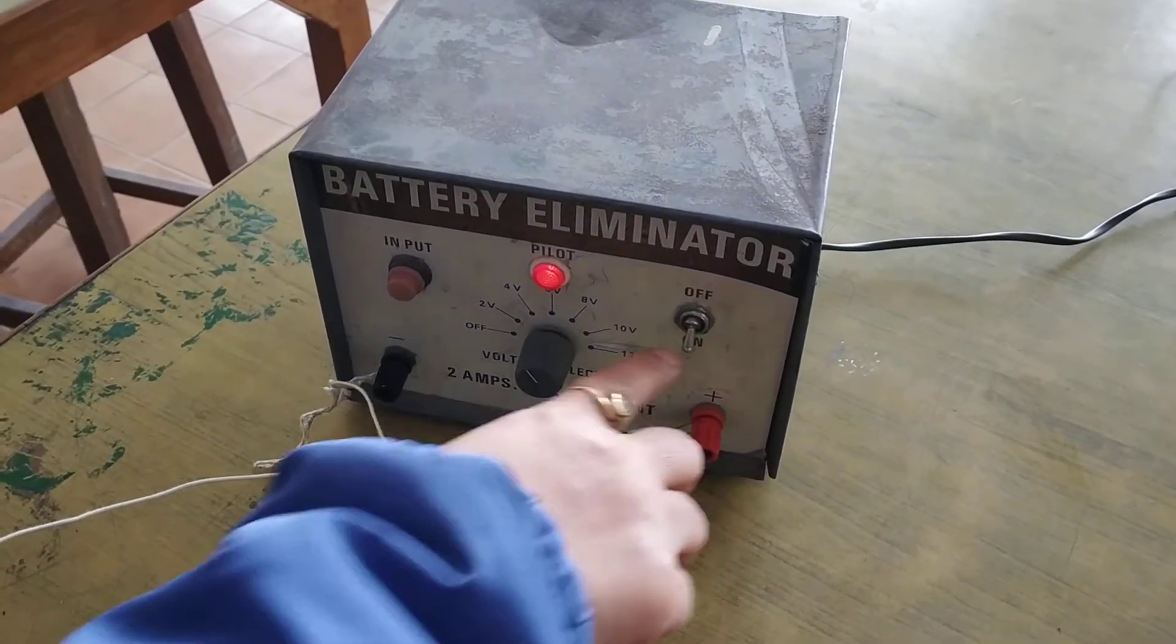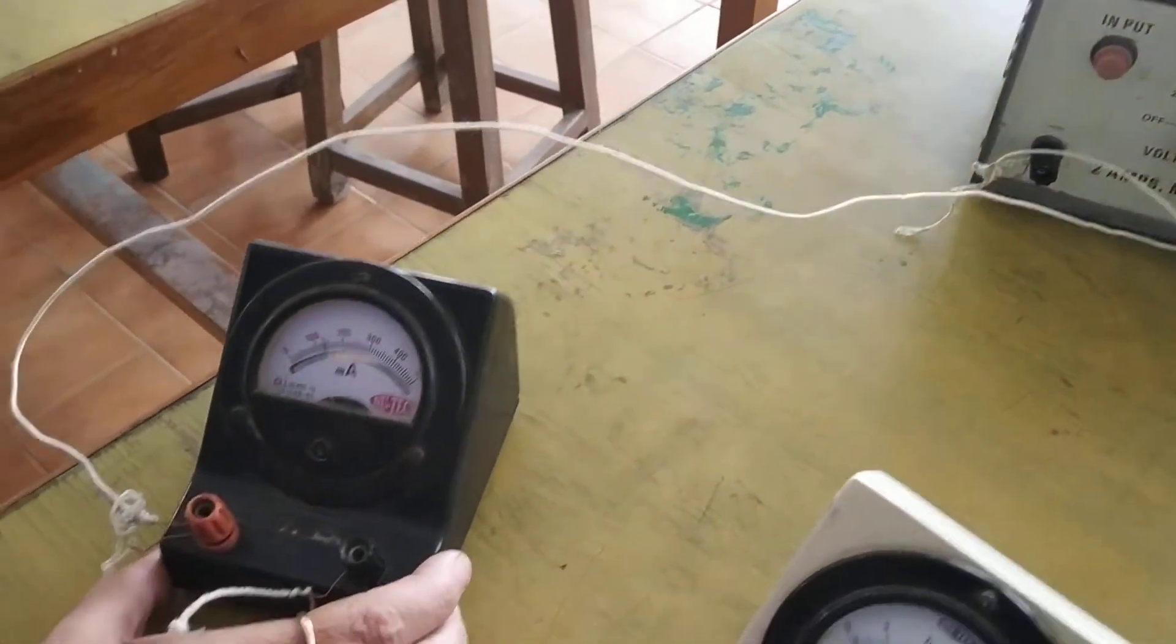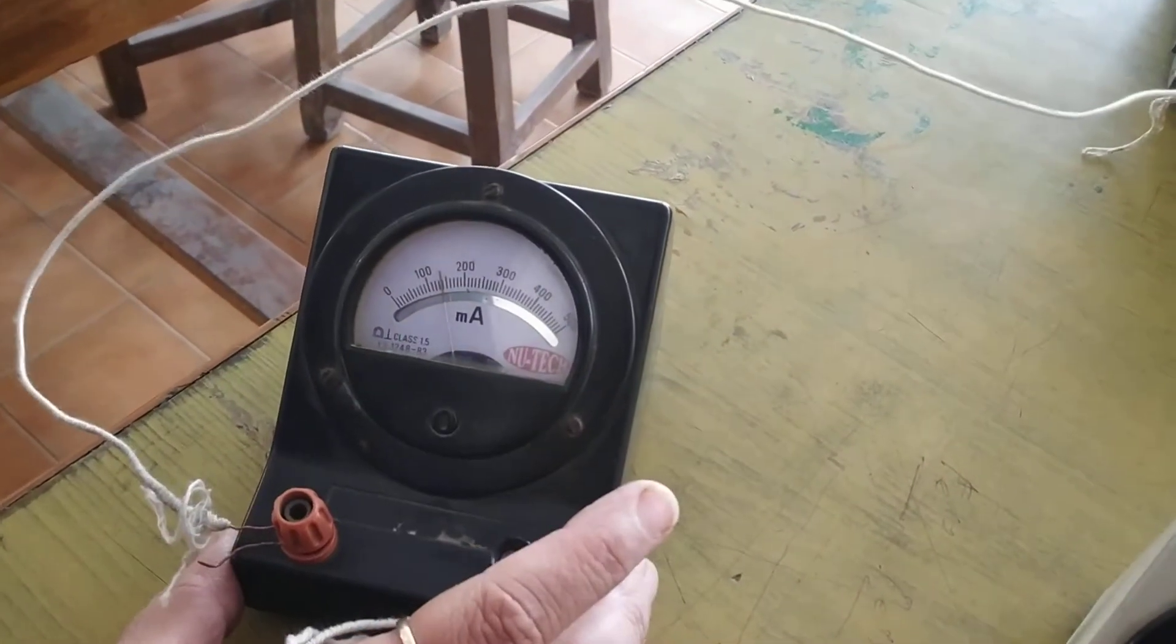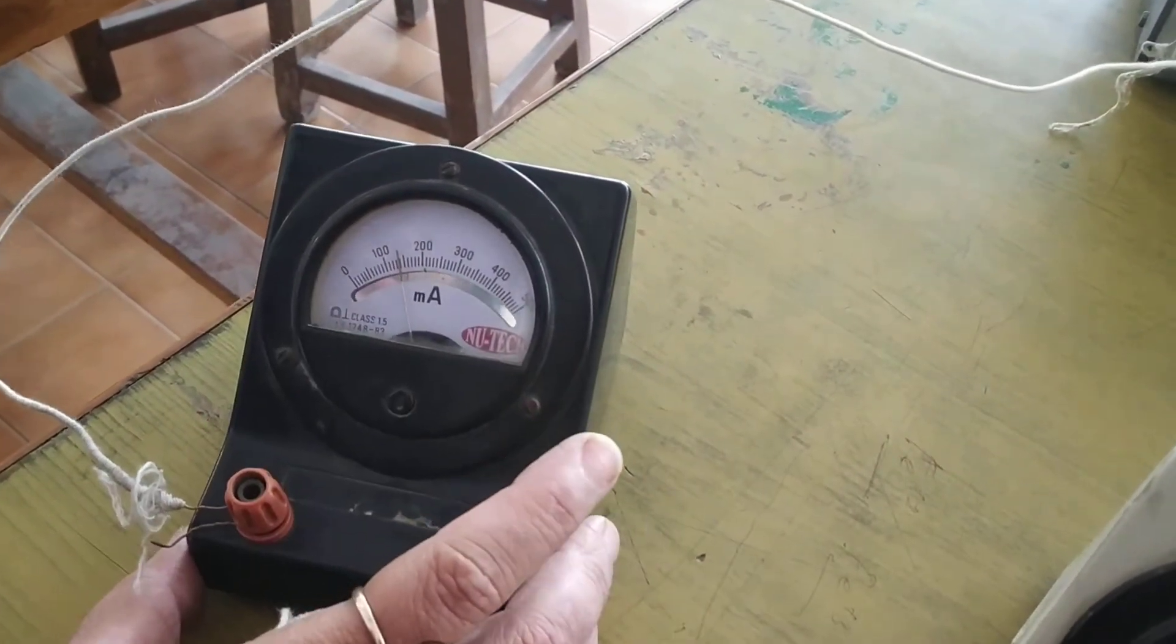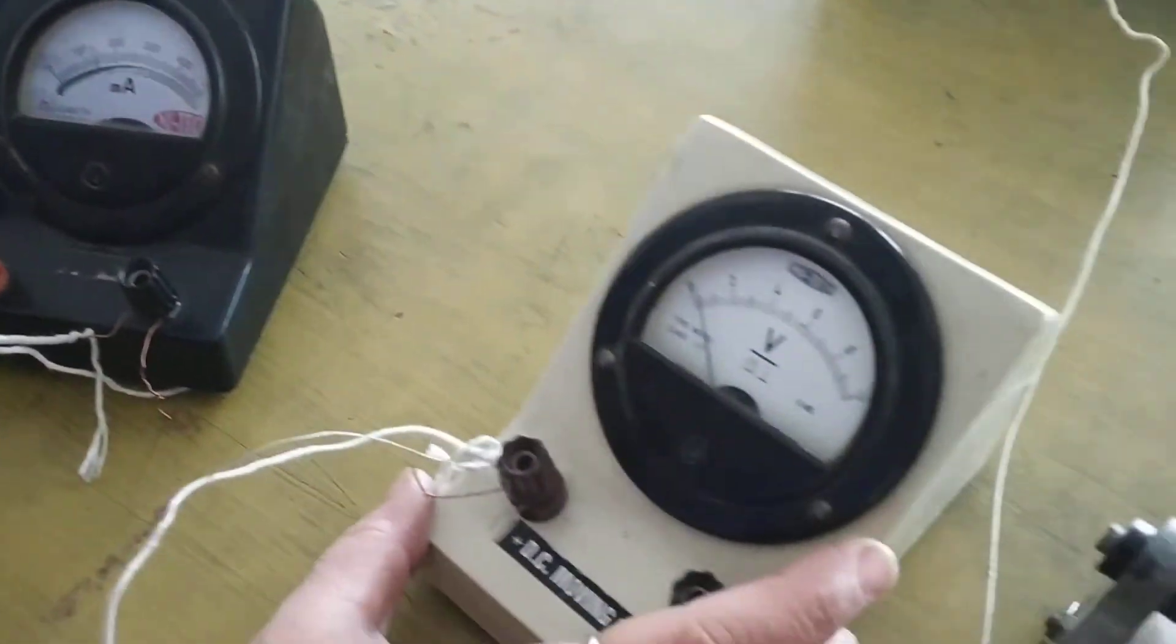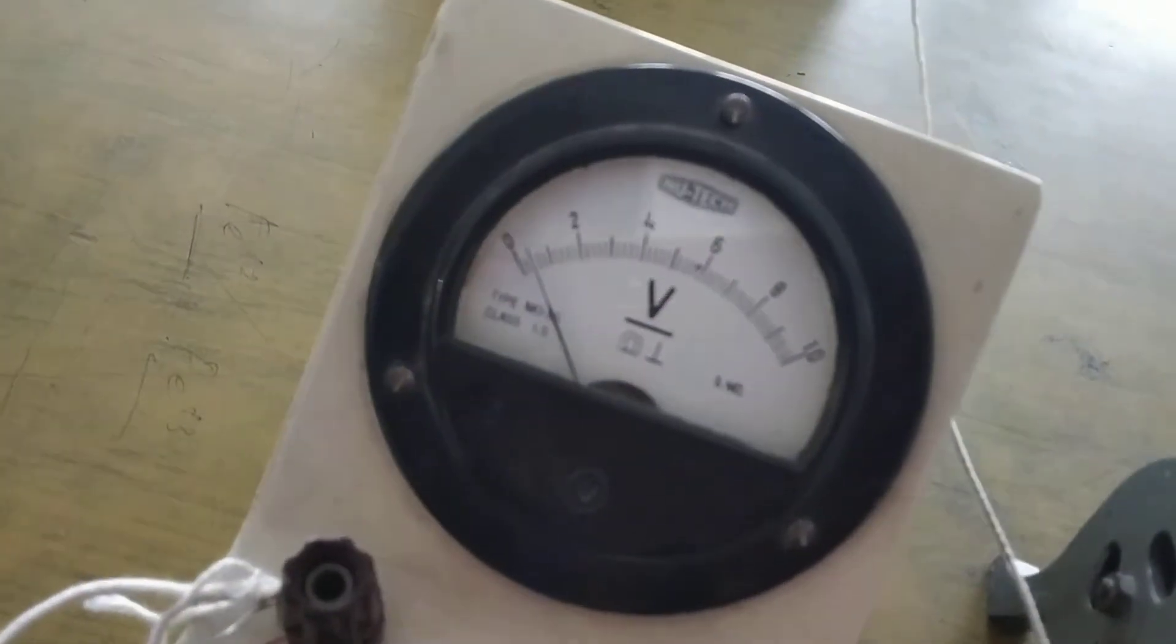As soon as we switch on, current flows through the circuit. We can see the needle showing a reading of around 300, and correspondingly the voltage is 0.4 volts.